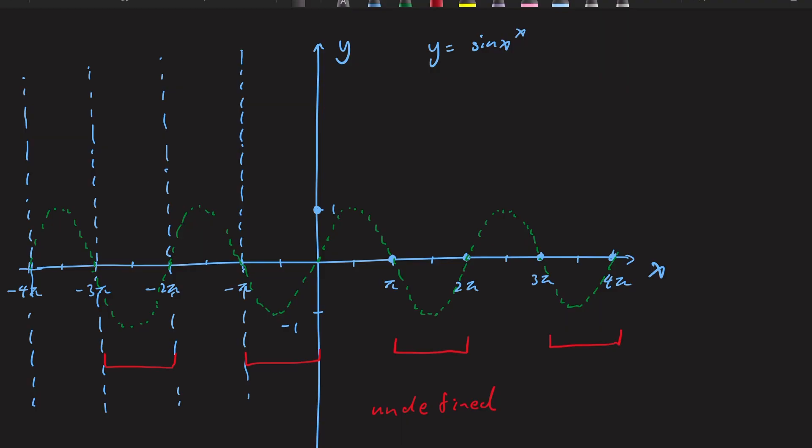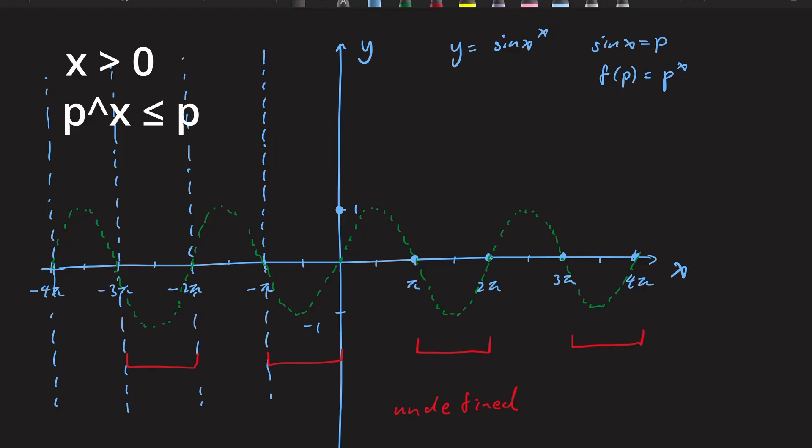We also know that for values between 0 and pi, p or sin x is between 0 and 1. I'm going to refer to sin x as p from now on for convenience sake. So for positive x, p to the power of x is smaller or equal to p. The equality holds only when p equals 1. So the graph will be in these regions.